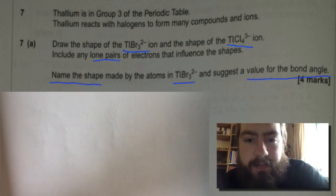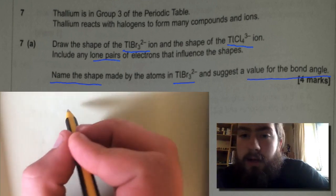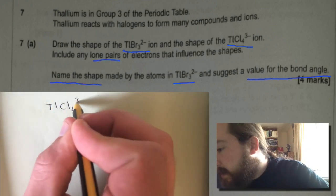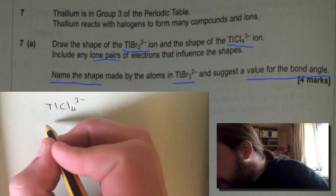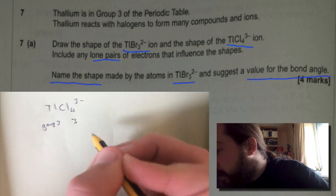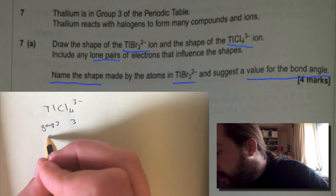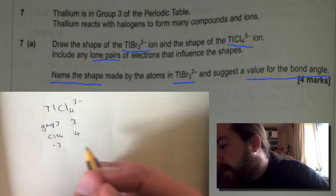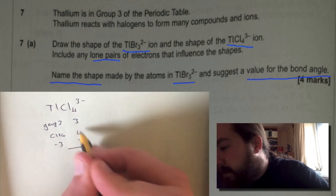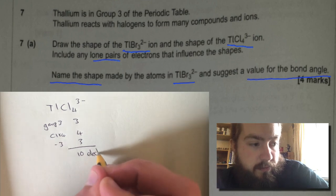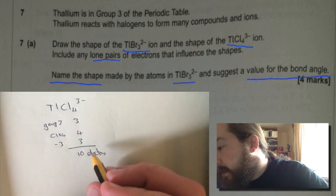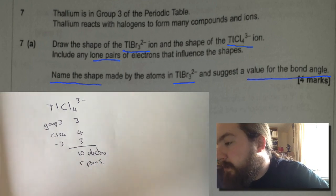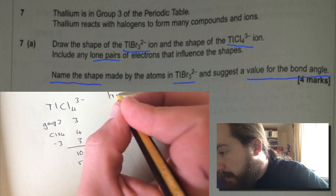That is trigonal pyramidal. The second part of the question is about thallium chloride, TlCl4 3-. Now again thallium is in group 3 so it has 3 electrons. We've got 4 chlorines so that's another 4 electrons and then we've got a minus 3 charge so we've got another 3 there. We add that up, we get 10 electrons, which is 5 pairs.